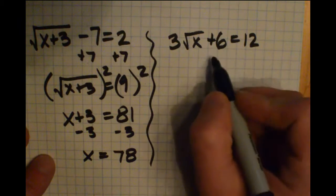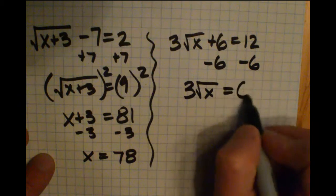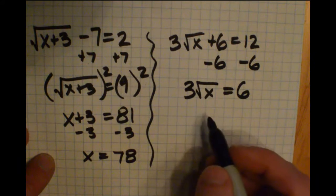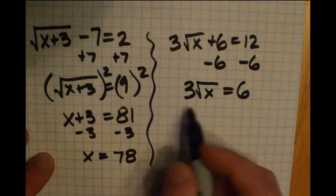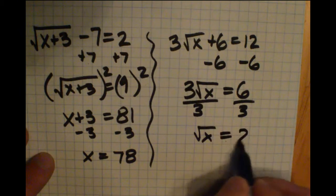So I'm going to try to get rid of that plus 6 by subtracting it from both sides. So 3 radical x is equal to 6. And now I've got a couple options. I could square both sides or I could divide by 3. I'm going to go ahead and divide by 3 this time. Get radical x is equal to 2.